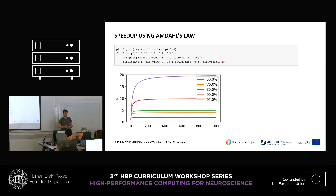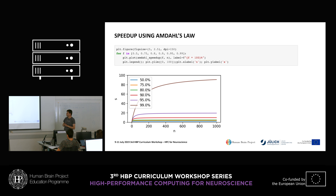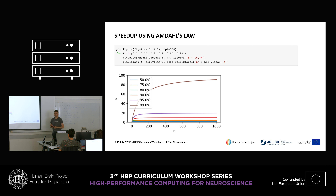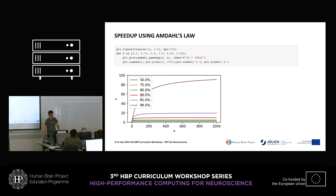This means we want to parallelize way more than just 90 percent. Even if 99 percent of our code is perfectly parallelizable — so adding more processors adds no overhead — we achieve a maximum speed-up of 100, and we need an awful lot of processors for this; at 1,000 processors we are only at about a speed-up of 90. So if you hear claims that people ported their codes to GPUs and achieved speed-ups of 100 or more, they were using a really poor serial code to start with, because it's pretty much impossible.